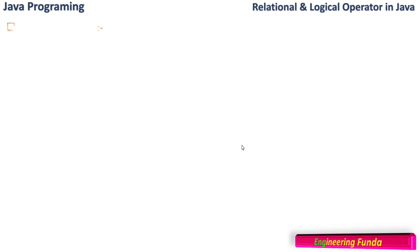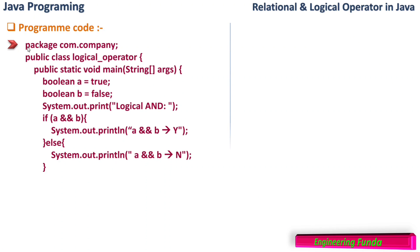Let us understand logical operators with an example. In the LogicalOperator class, inside public static void main, there are two boolean variables a and b: a is true and b is false. For the logical AND, a && b means true AND false. Since one operand is false, the AND operator results in false, going to the else part and printing 'a and b is false'.